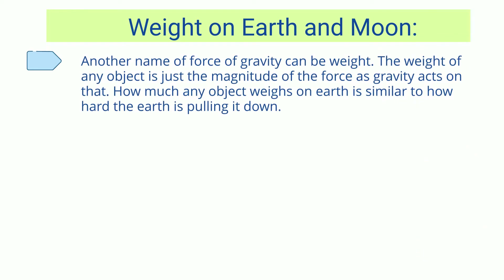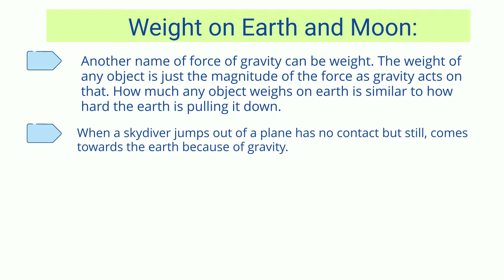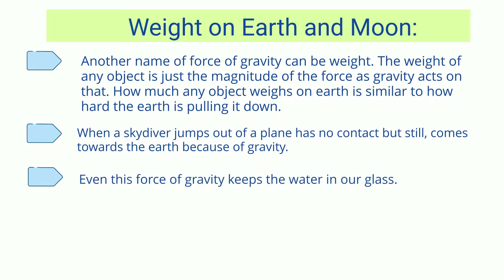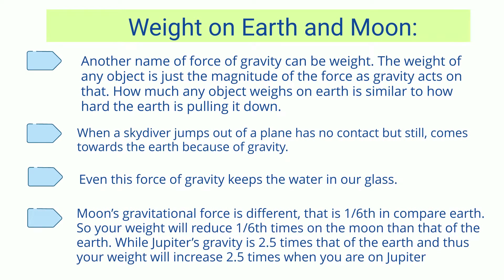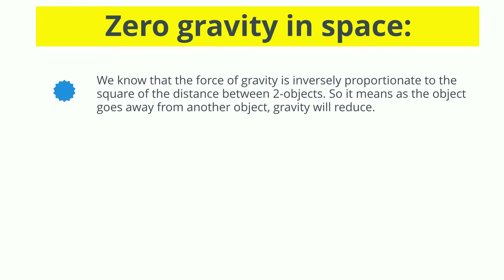Another name for the force of gravity is weight. The weight of any object is the magnitude of the gravitational force acting on it. When a skydiver jumps out of a plane with no contact, they still come towards the earth because of gravity. The Moon's gravitational force is one-sixth that of Earth, so your weight on the Moon will be one-sixth of your Earth weight, while Jupiter's gravity is 2.5 times that of Earth, increasing your weight 2.5 times.